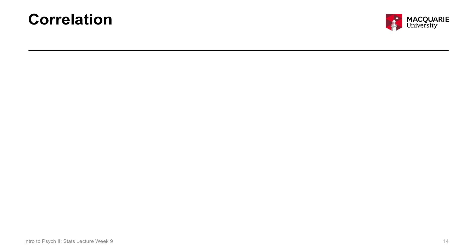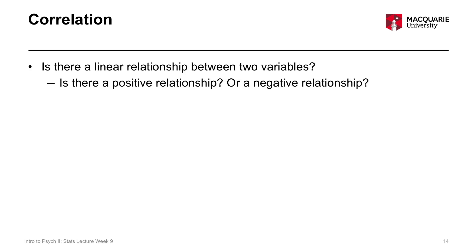A correlation is going to test to see whether there's a linear relationship between two variables. That's the kind of question a correlation can address: is there a positive relationship or a negative relationship? Both of those are forms of relationships, but they're in opposite directions.